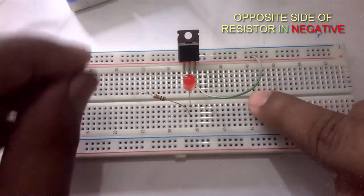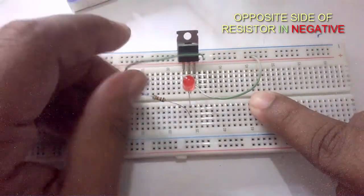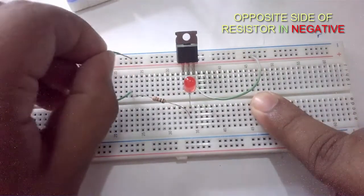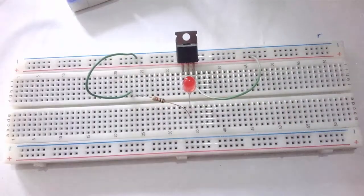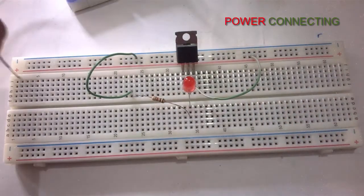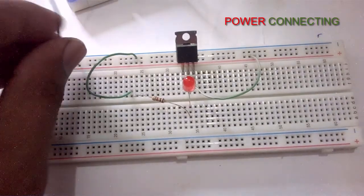And opposite side of the resistor goes to the negative. Now connecting power to the circuit.